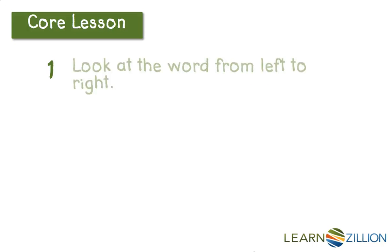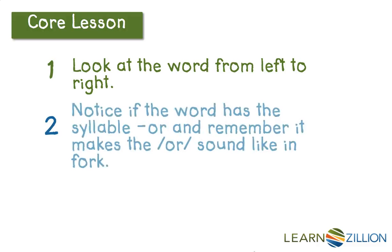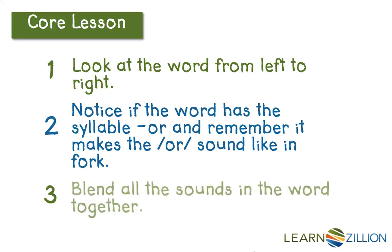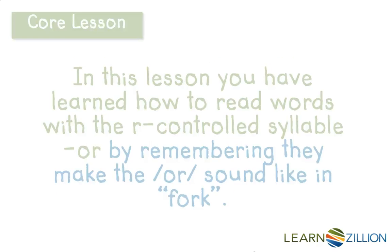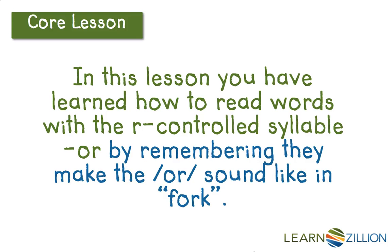Here are the steps I just did to read 'cord' — the same steps I used to read 'born.' First, I looked at the word from left to right. When I did that, I noticed that the word had an OR in it, and I remembered that OR makes the OR sound like in fork. Then I blended the first sound, C, with OR, and the last sound, D, to read the word 'cord.' I blended all of the sounds in the word together. In this lesson, you have learned how to read words with the R-controlled syllable OR, by remembering they make the OR sound like in fork.